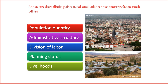Distinguishing Features of Rural and Urban Settlements. Today we embark on a journey to unravel the distinctive features that set rural and urban settlements apart. As we explore the nuances of these human habitats, we will focus on key elements that define their character and dynamics. 1. Population Quantity. One of the fundamental factors that differentiate rural and urban settlements is population size. Rural areas are typically characterized by smaller, tight-knit communities, while urban areas boast larger and more diverse populations. This contrast in numbers shapes the social fabric and lifestyle of each settlement type.